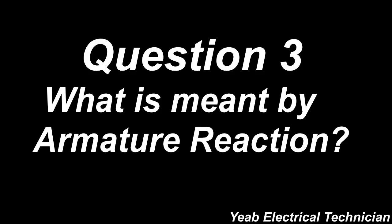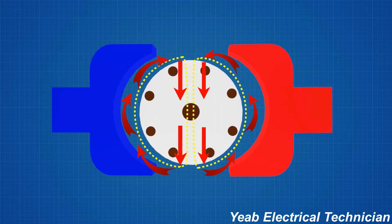The third question: what is meant by armature reaction? Answer: the effect of armature flux on the main flux is called armature reaction. The armature flux may support the main flux or oppose the main flux.